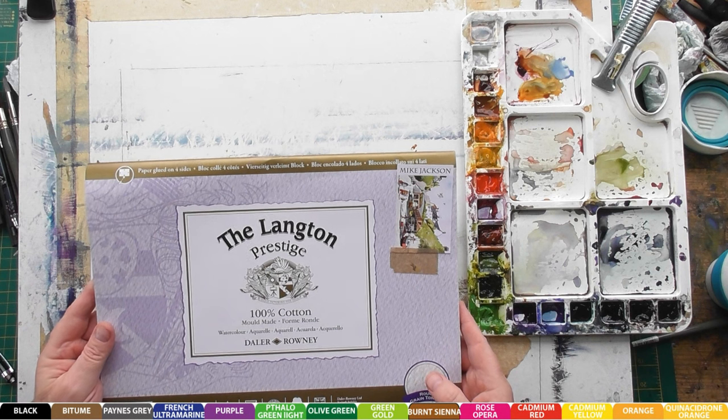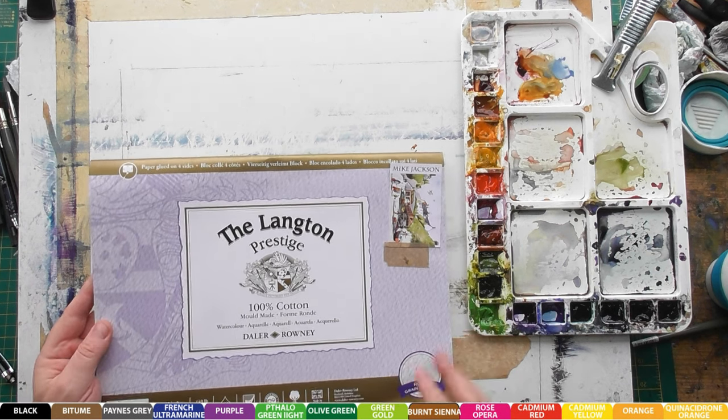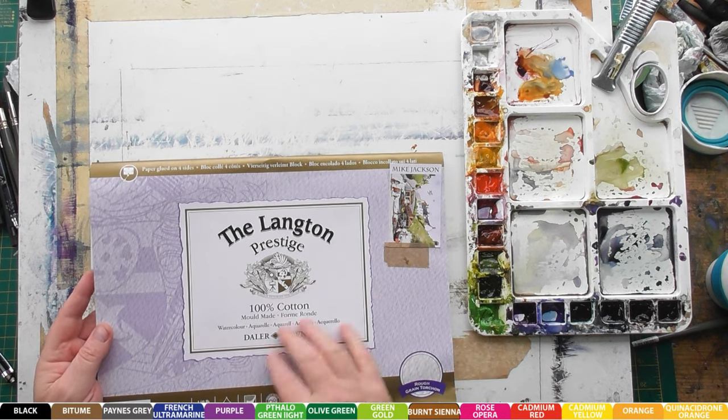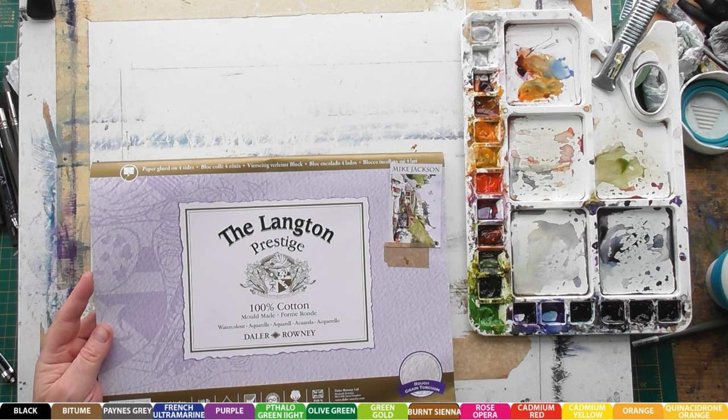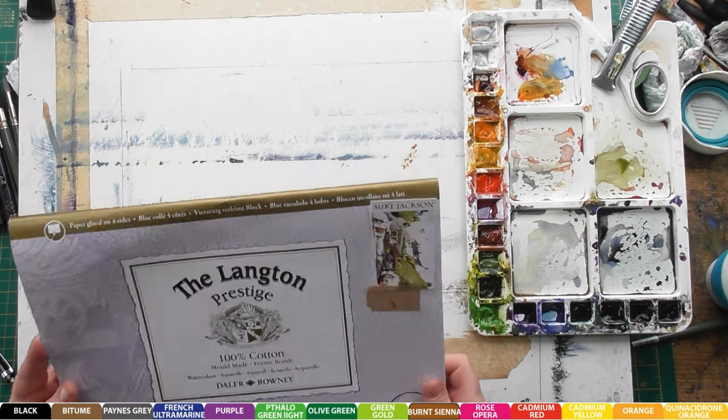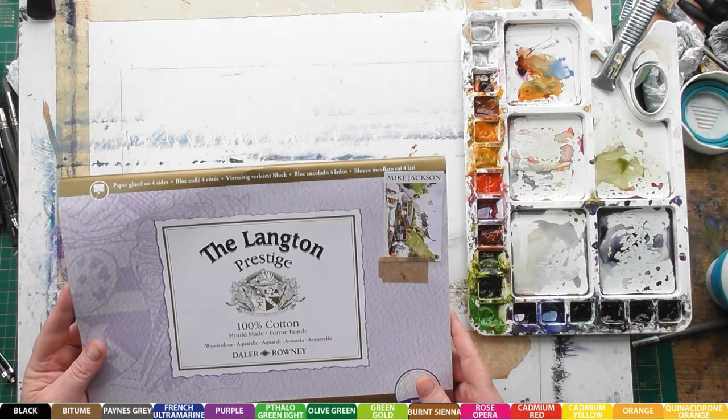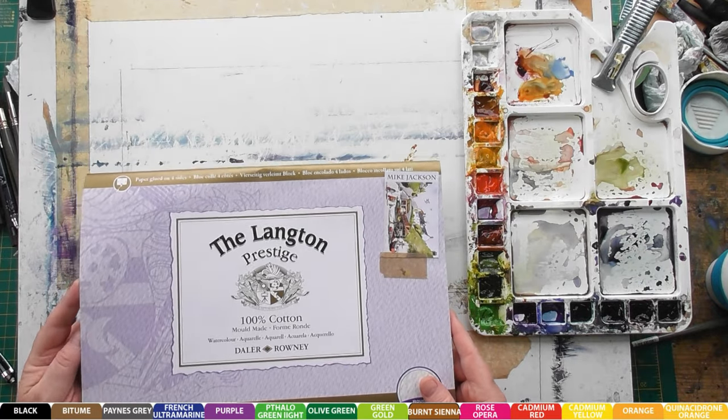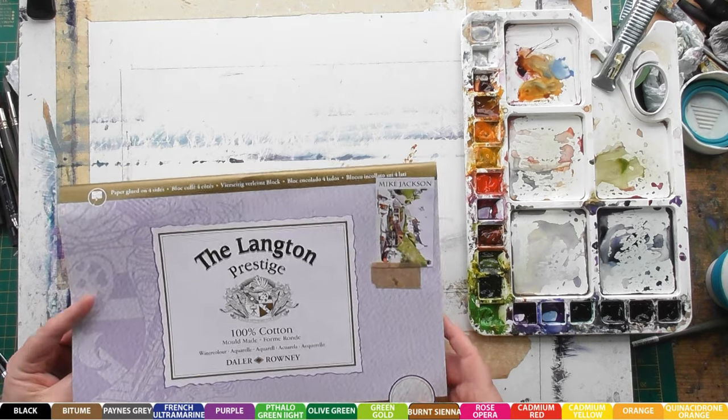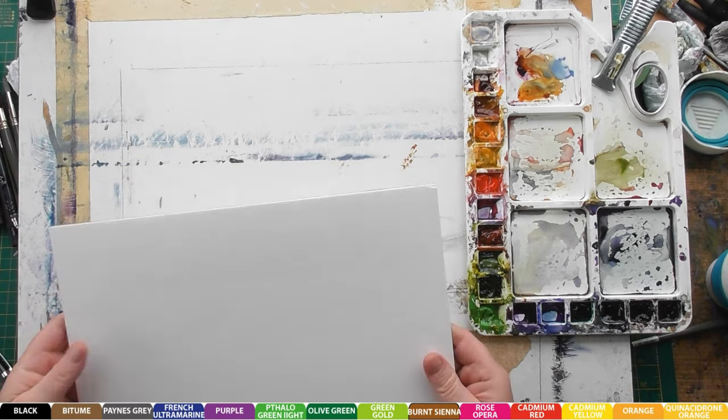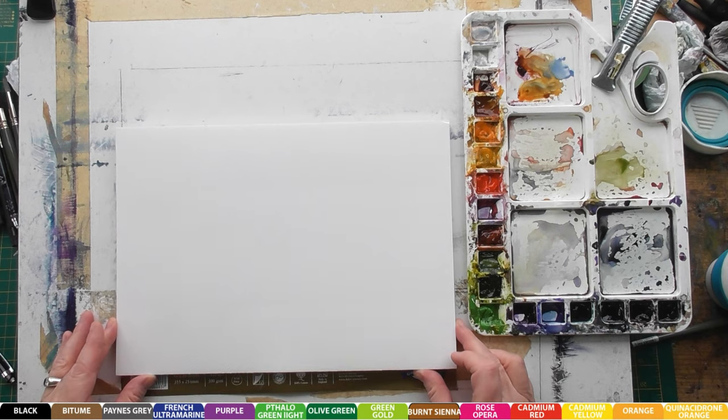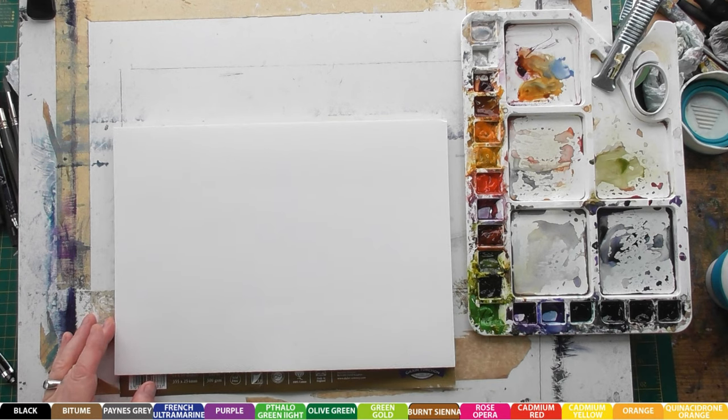I'm using a Langton Prestige, and it is a 14 by 10 inch size, 140 pound which is 300 GSM. It's glued on all sides so I don't have to wet it or whatever. It's rough.